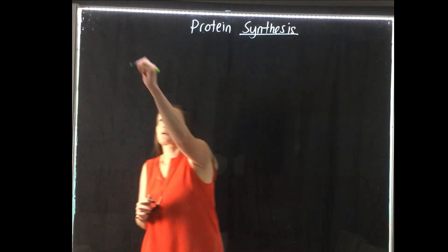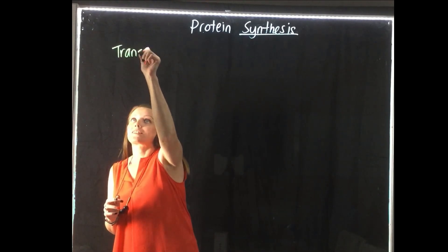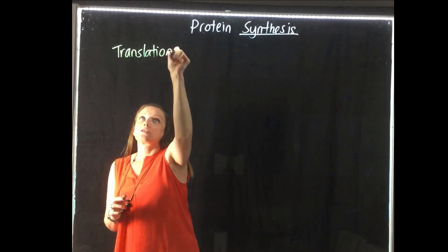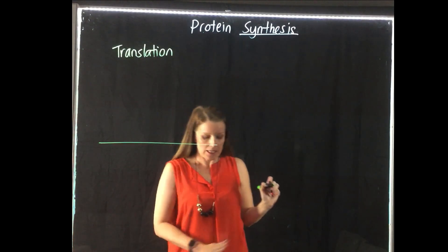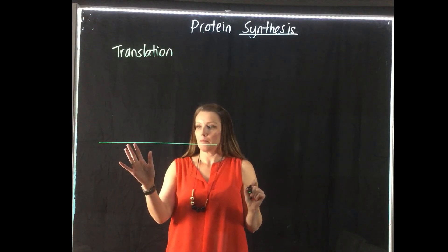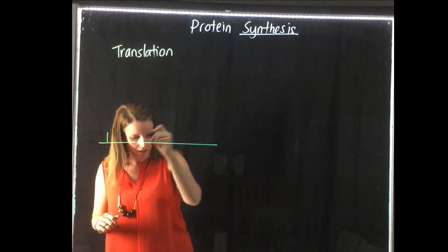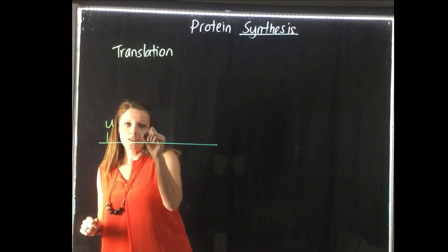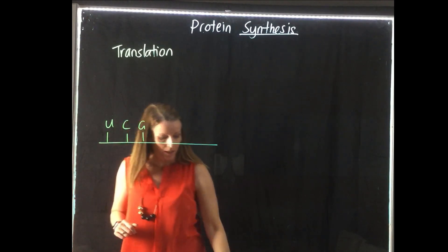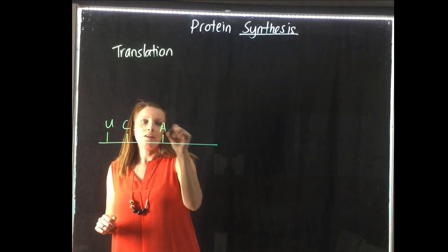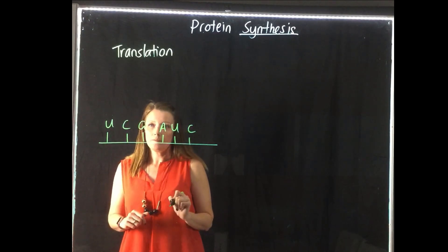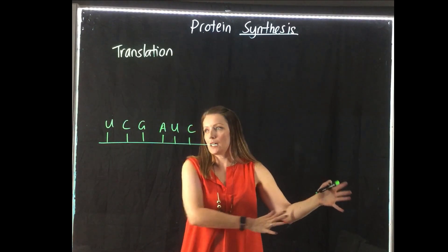So our mRNA strand, I'm going to draw it this way now, just to make it a little bit easier to see how it all fits together. So we had U, C, G, A, U, C. So that was our mRNA strand that we had over here. It's now laying flat, just so we can see it a little bit better.